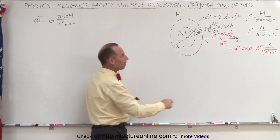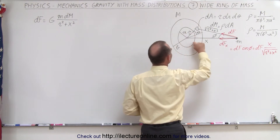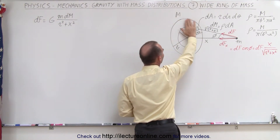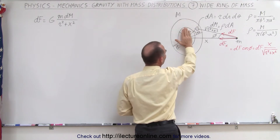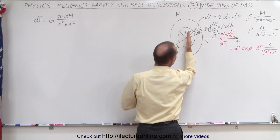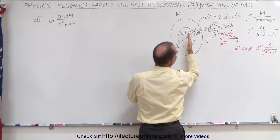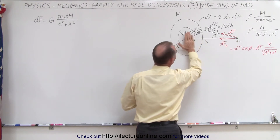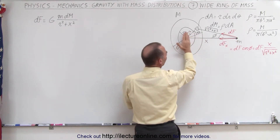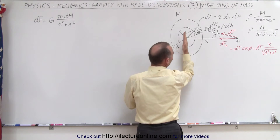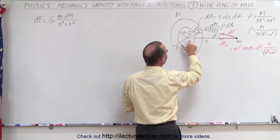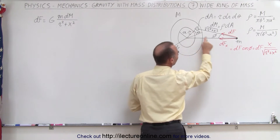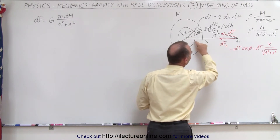We have a small mass m and a wide ring that has a hollow portion with mass M. The full mass of this ring is M. It's oriented so that the plane is perpendicular to the line connecting this mass and the ring. The inner radius is a, the outer radius is b, and the distance from the center to the mass is x — that's a constant.